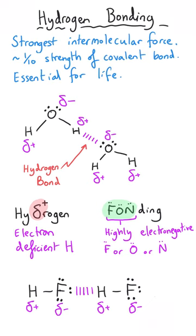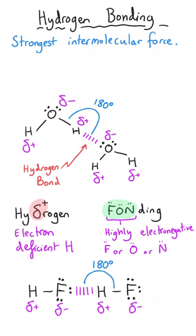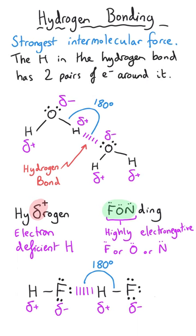When you draw them, it's also important to get the bond angles correct around the hydrogen forming the hydrogen bond. This hydrogen only has two pairs of electrons around it — the one in the covalent bond between it and, in this case, the oxygen, and the hydrogen bond which is the lone pair of electrons. As a result of that, it will be linear around that hydrogen atom and the bond angle will be 180 degrees.